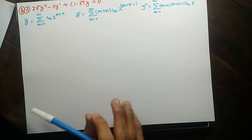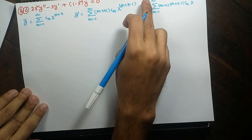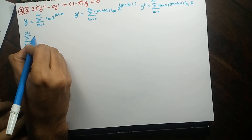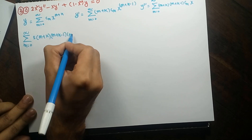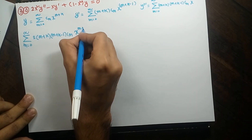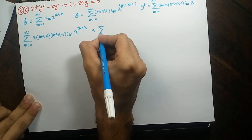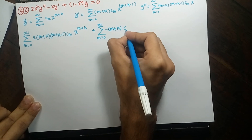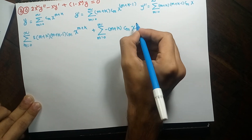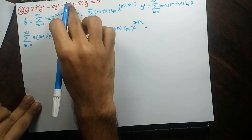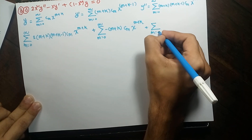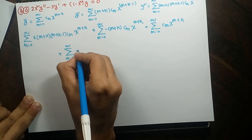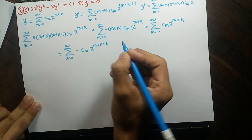When putting into the ODE, y'' is multiplied by 2x², so the coefficient 2 is added and the power of x rises by 2 — the minus 2 cancels and we have x to the power n+k. Then y' is multiplied by minus x, increasing x's power by 1, giving x to the power n+k. Simply y gives c_m x^(n+k), and minus x² y gives a coefficient of minus 1 with x's power increased by 2.